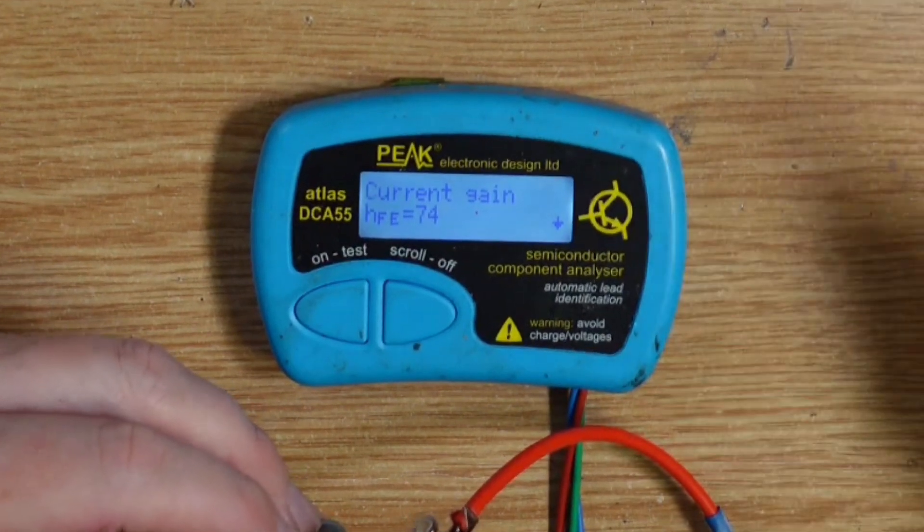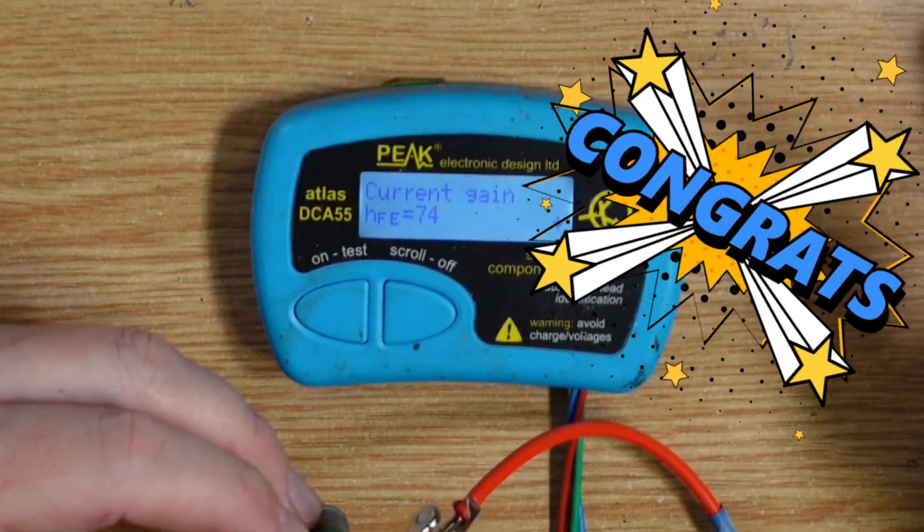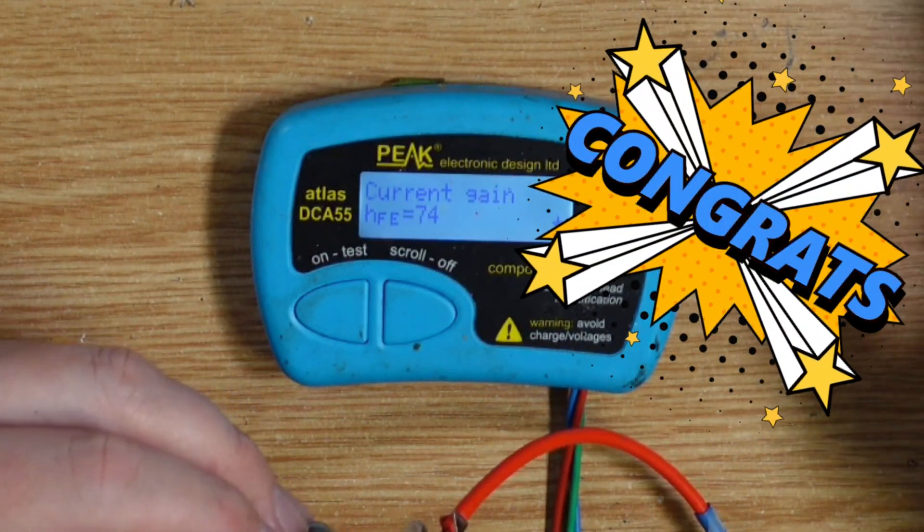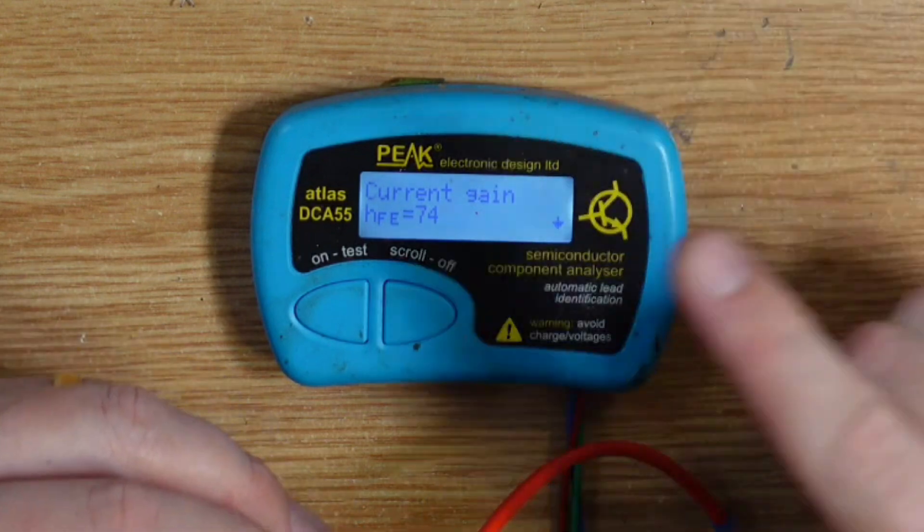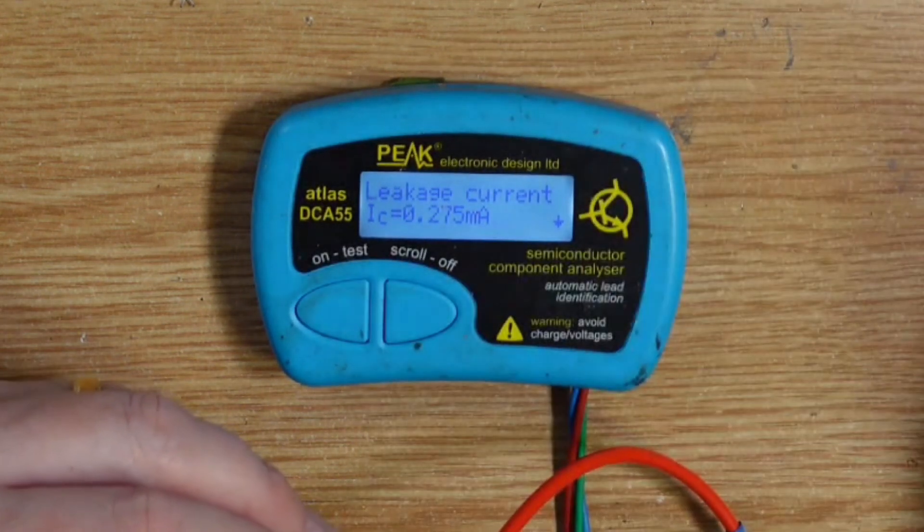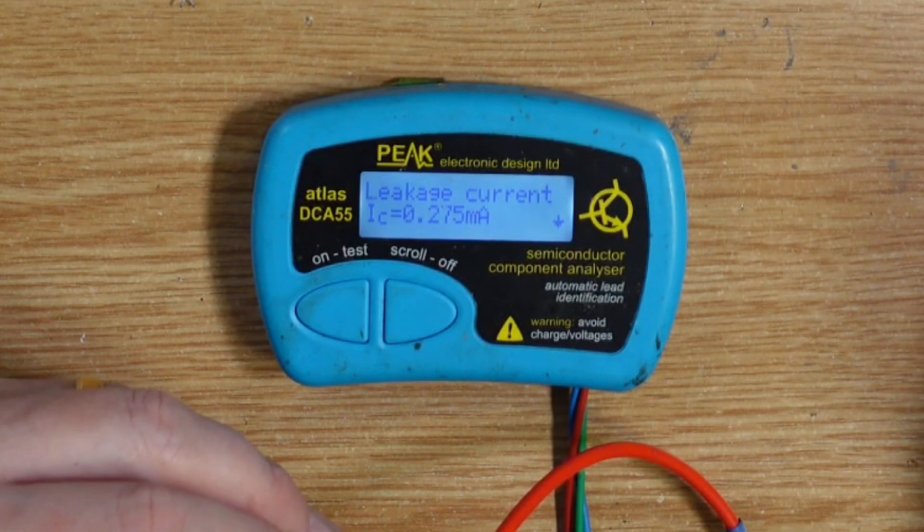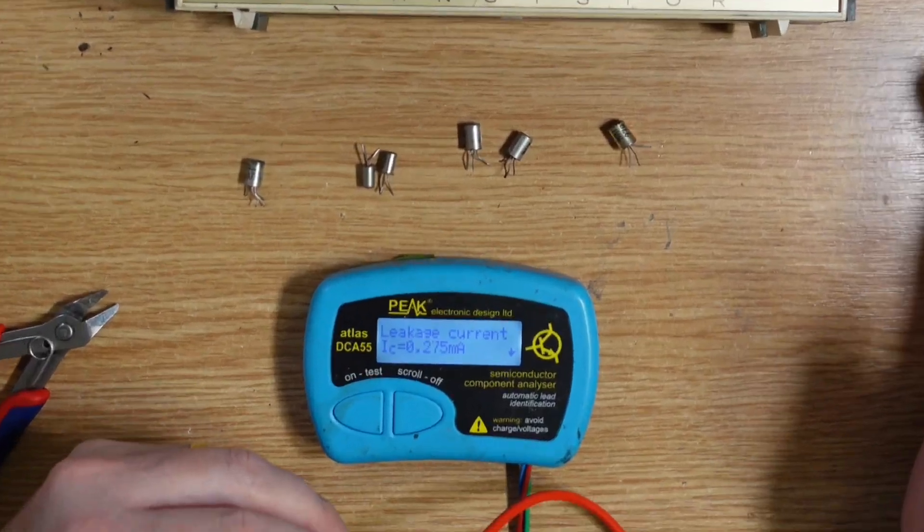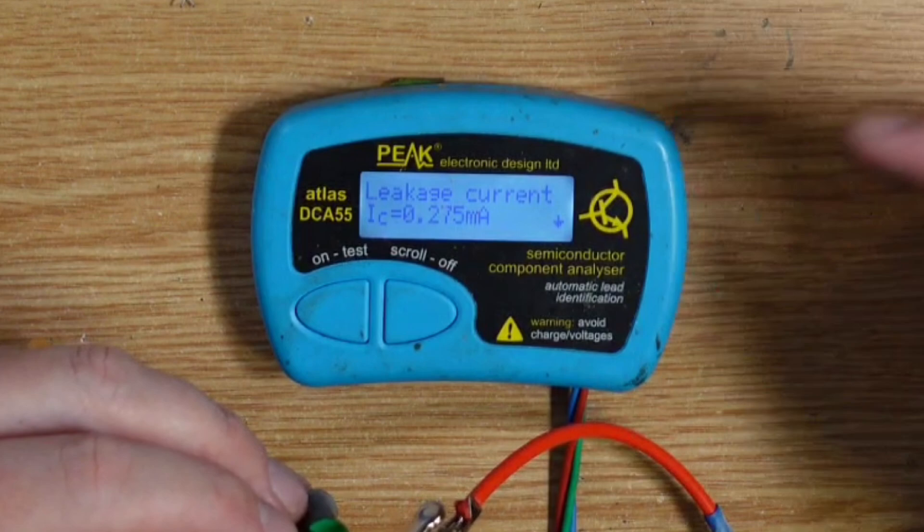Oh my god. It's got an HFE of 74. That could not be more perfect for both Range Master and Fuzz Face Q1. Come on now. Come on now, moment of truth. Would you believe that the leakage on this one is 0.275? What? NKT275.